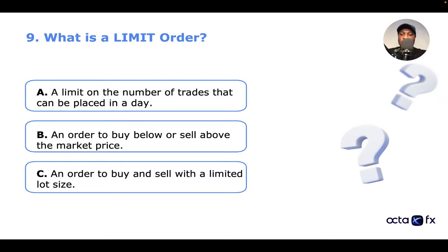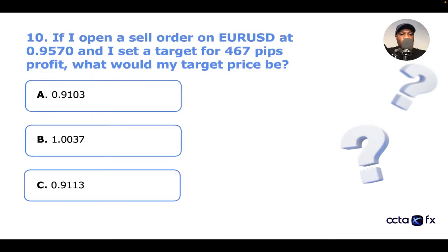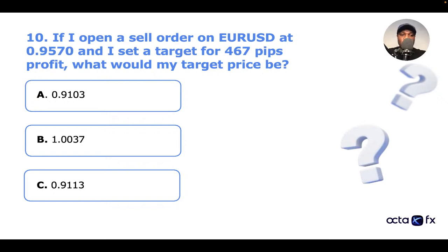We're moving to the last question, number ten. This one involves calculations, so take your time. If I open a sell order on EUR/USD at 0.9570 and I set a target for 467 pips profit, what would my target price be? A: 0.9103. B: 1.0037. C: 0.9113. Type your answer in the comments.